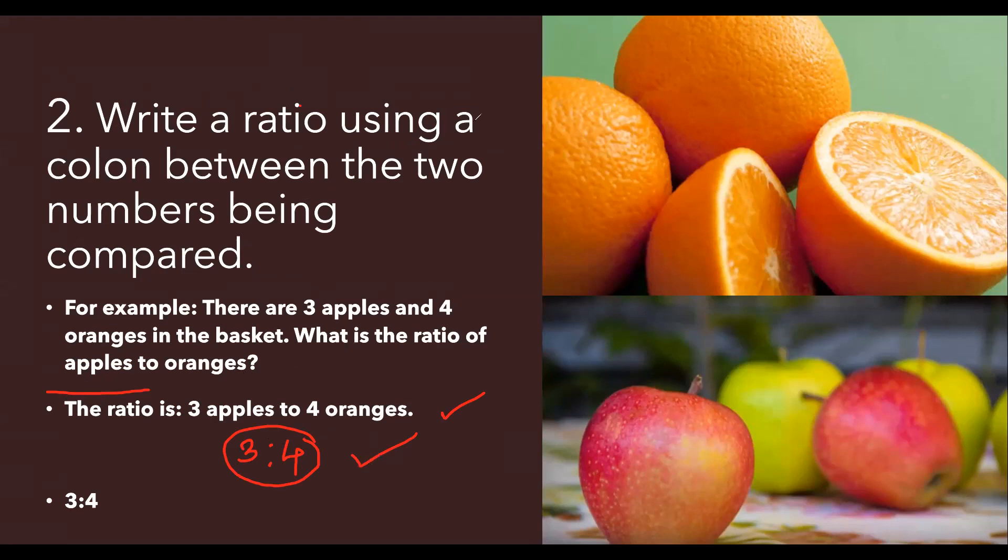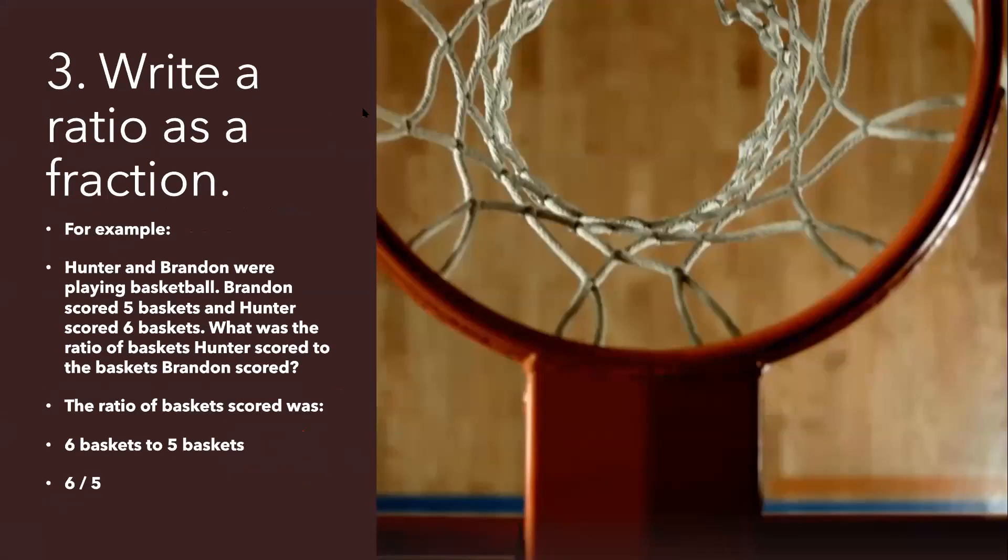This is the most common form that we are going to see in most of the questions in mathematics. Now let's look at the third category. How do we write it in the third way? Write the ratio as a fraction. So in fraction, you just take the ratio and write it as a numerator over denominator.